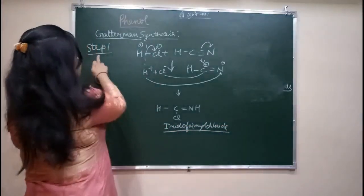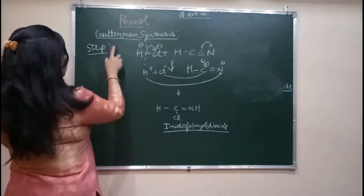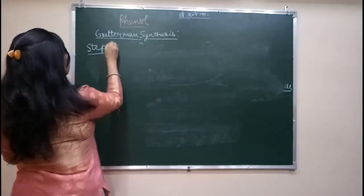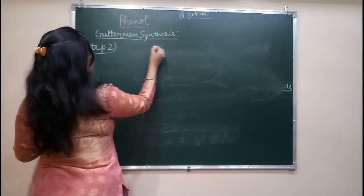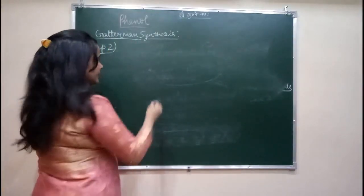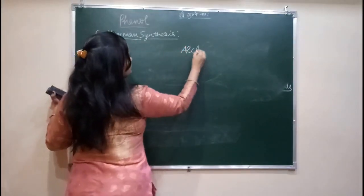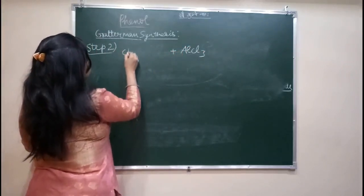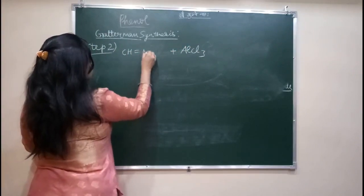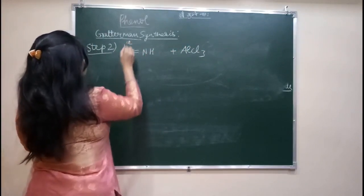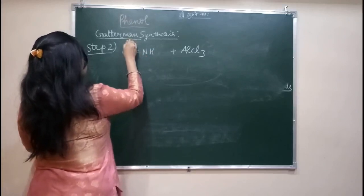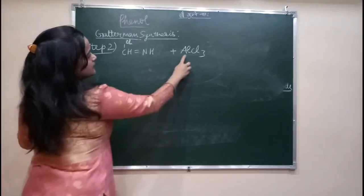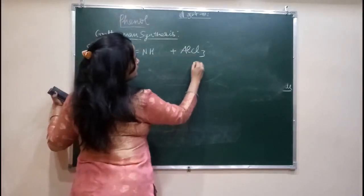Now we come to step two. One more reagent has participated in the reaction — that is aluminium chloride, AlCl3. So what we have formed is iminoformyl chloride, and now aluminium chloride participates.